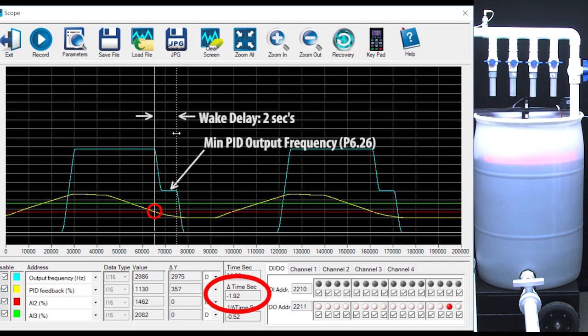you get to specify what frequency you want the motor to hold at while waiting for the sleep delay. Maybe you have a mixing application and you want to mix slowly for a while before shutting down to reduce foaming. Or maybe you have a pumping application and you want the pump to run slowly for a bit to top off the tank with less turbulence before shutting the motor down. Being able to specify that min drive speed during the sleep delay is real handy in those kinds of applications.